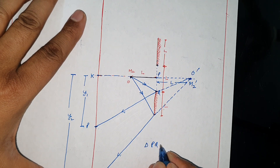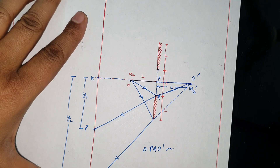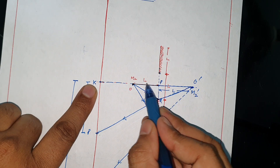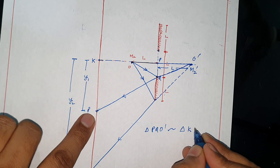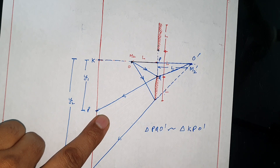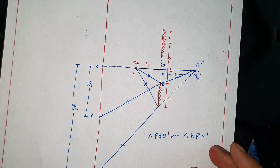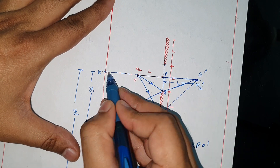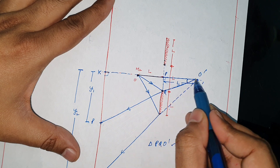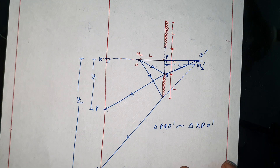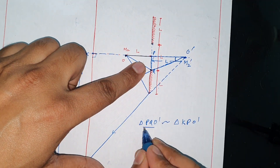Consider triangle PQO. This is the triangle. The similar triangle to this small triangle is the big triangle. For two triangles to be similar, two properties must be equal. This angle is 90 degrees, and this angle is also 90 degrees, and this angle is common to both triangles — so two properties are proven equal, making these similar triangles.